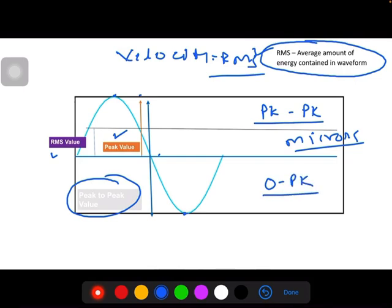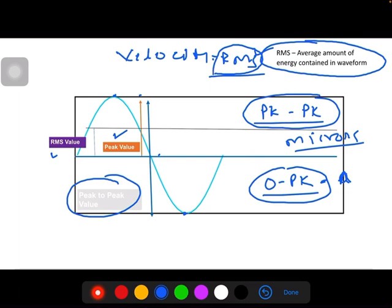In case of acceleration, when there's severe impact or damage in the bearing, we need to understand the maximum extent of damage, so we use zero to peak for acceleration. For displacement we generally use peak to peak in micron, and for velocity we use RMS, root mean square value.